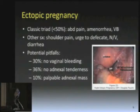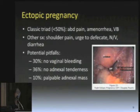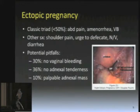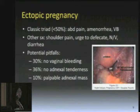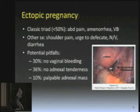The classic triad of abdominal pain, amenorrhea, and vaginal bleeding is only present in less than half of ectopic pregnancies. Other symptoms patients might have include shoulder pain if there's fluid under the diaphragm, an urge to defecate if there's fluid in the posterior cul-de-sac. And interestingly, a lot of them present like gastroenteritis — nausea, vomiting, and diarrhea. So beware of patients that look just like gastroenteritis if they have a significant amount of abdominal pain.